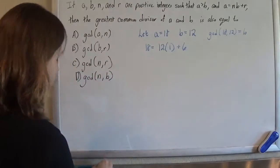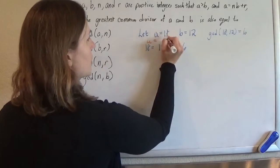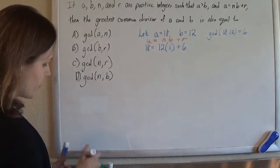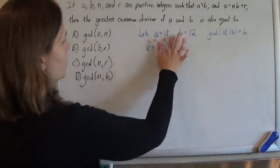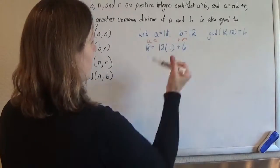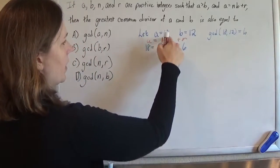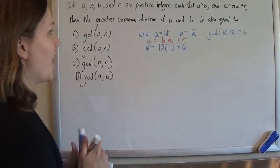So comparing this to our a equals nb with the remainder of r, then, oops, I wrote it backwards. This was the b and this was the n. B was 12. 12 was in there once. Yay.